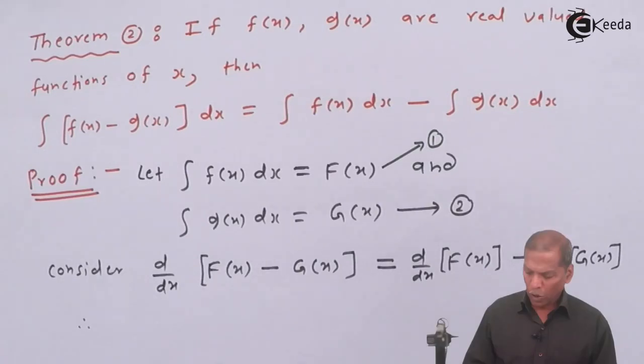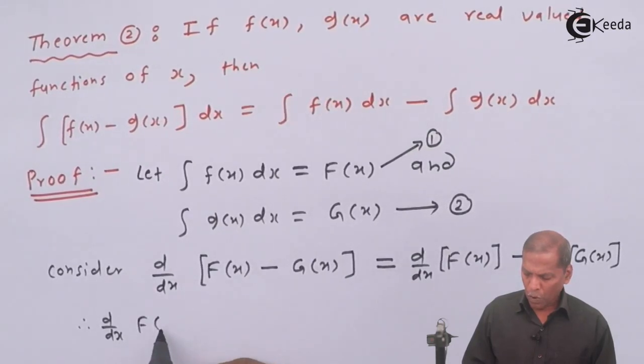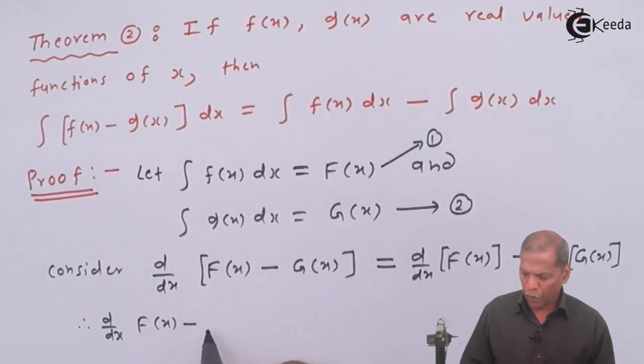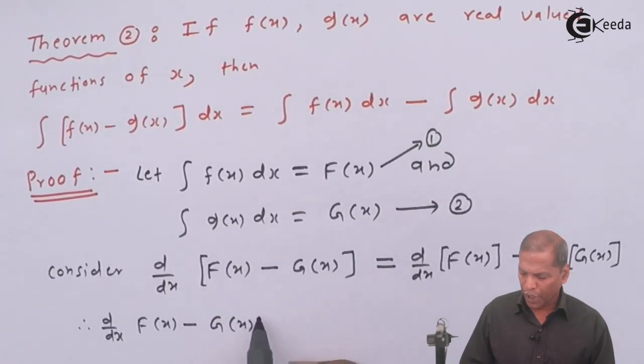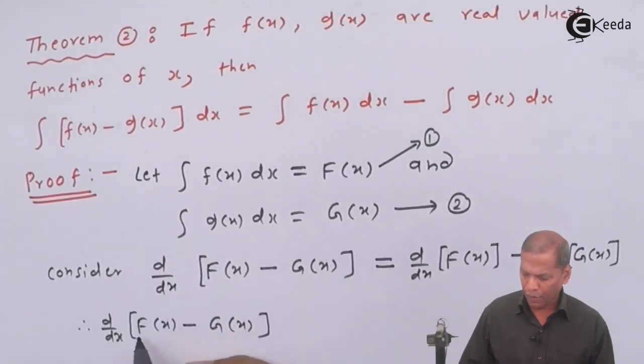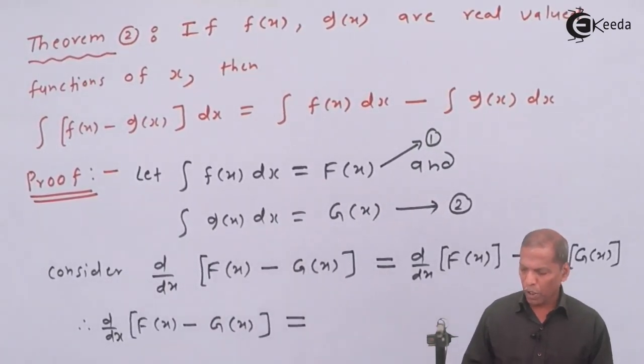Therefore, the next step will be: d/dx of [F(x) - G(x)] is equal to